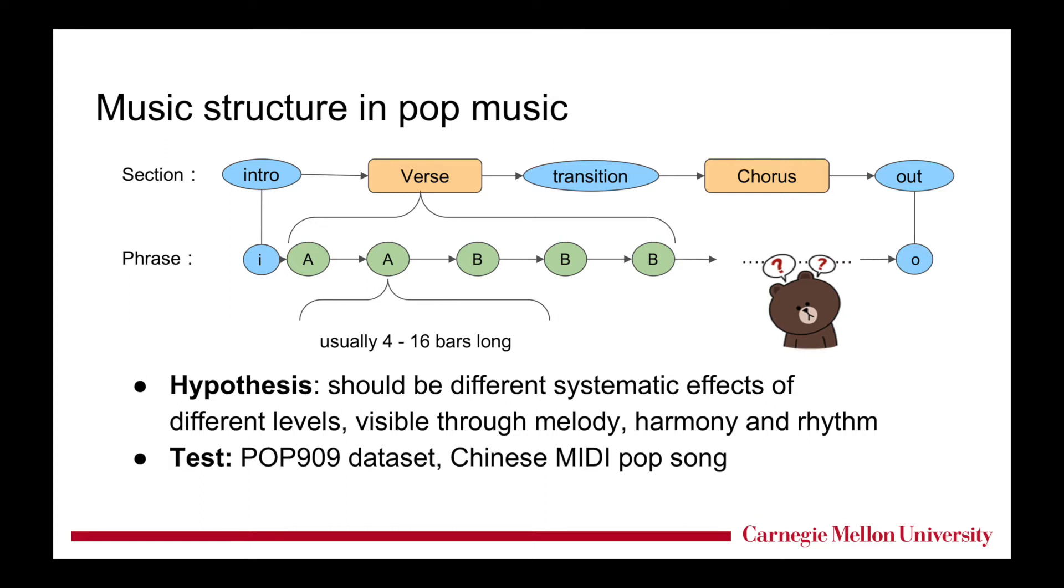We test this hierarchy on a pop song dataset that contains 909 Chinese pop songs in MIDI. Notice that these MIDI files have separated melody and accompaniment tracks. We first determine the two-level hierarchical structure through an algorithm purely based on repetition and similarity detection, which we will talk about later. And then we analyze the structural influence.